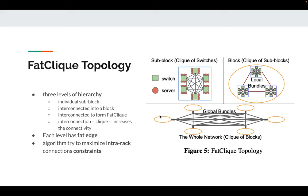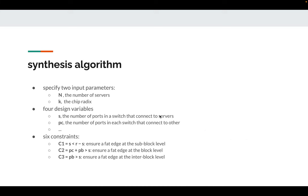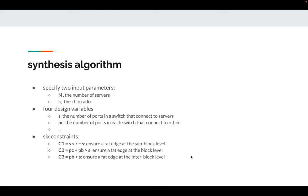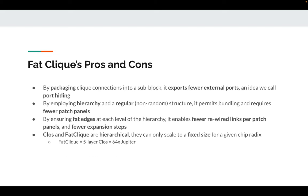Let's talk about the synthesized algorithm. The designer specifies two input parameters: N as the number of servers and K as the chip radix. The algorithm takes these inputs and determines the fat clique instance. It enforces constraints — for example, C1 ensures fat edge at the sub-block level, and C2 ensures fat edge at the block level — so the constraints ensure fat edge at every level of hierarchy.